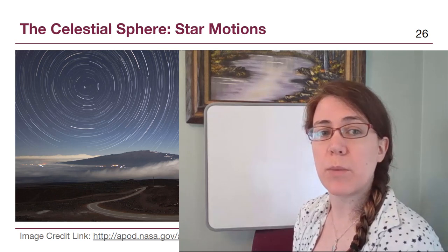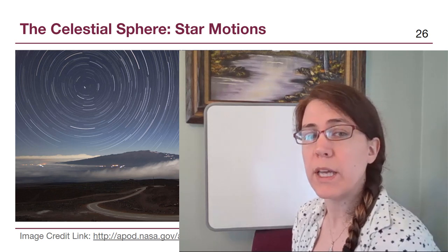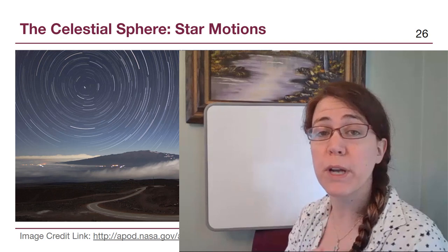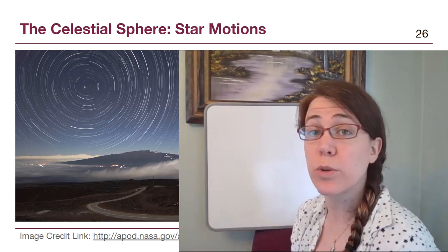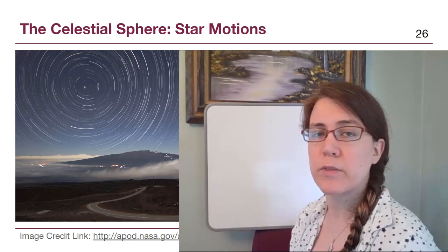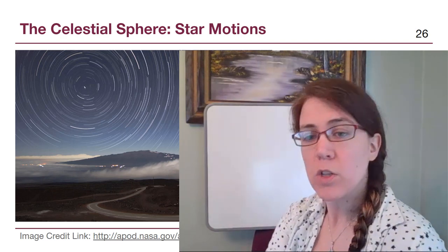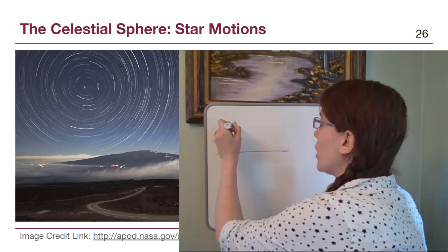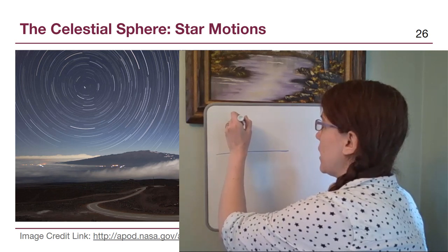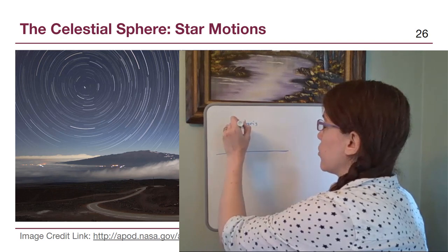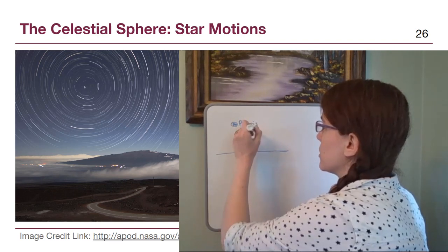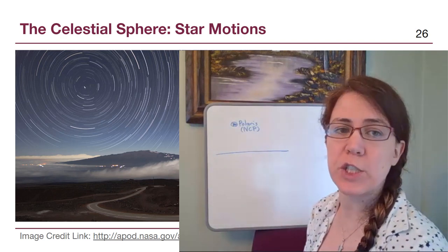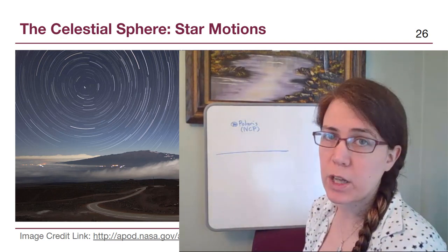We had seen this picture of star trails from Hawaii and talked about the fact that the central object in all these different circles, the bright and shortest arc, is the North Star Polaris. In the true center of all these circles is the sky point, the North Celestial Pole. I want to draw this out to point out some key things.